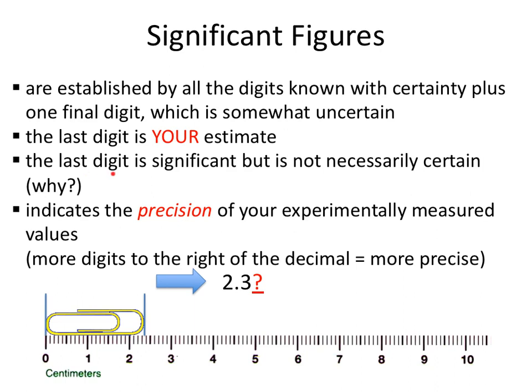The last digit is significant but not necessarily certain, because there's some variability — we're all human beings with our own set of eyes. The number of significant figures you have is going to help dictate the precision of your measured values. The more significant figures — the more digits you have — usually the more precisely you know your measurement. Another way to look at this: the more digits to the right of the decimal, the more precise the piece of equipment.